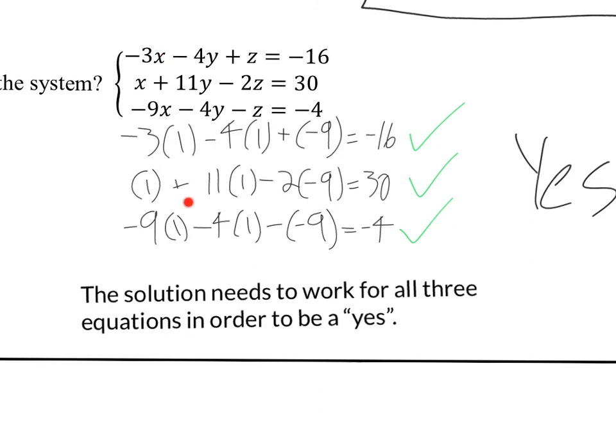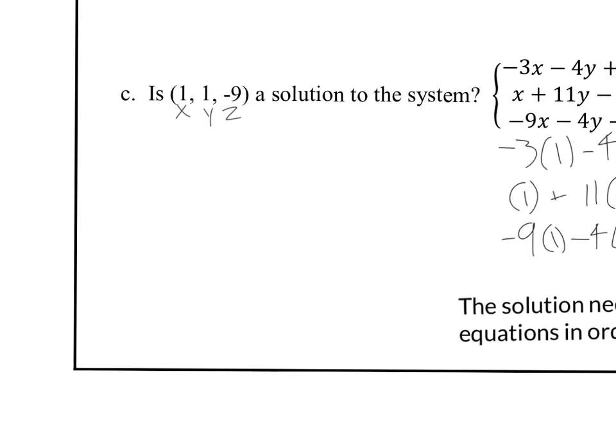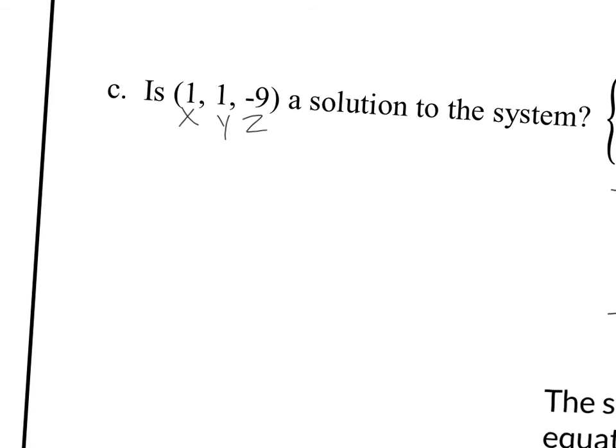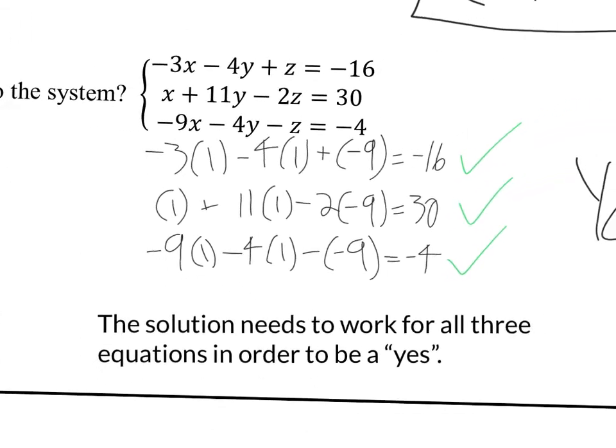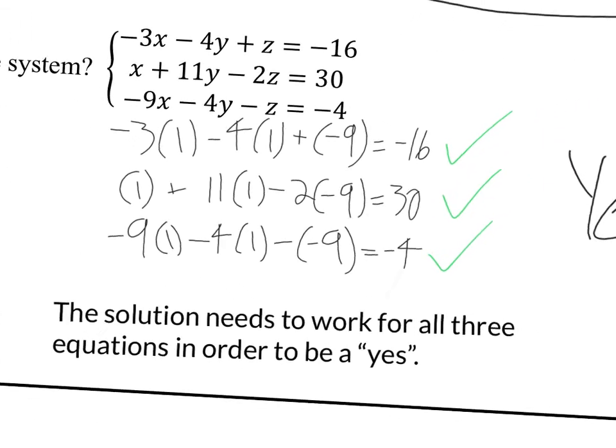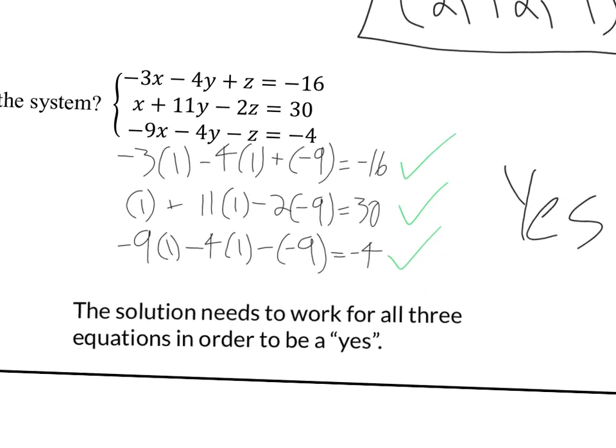I plugged in, you know, 1 for x, 1 for y, negative 9 for z. All right. And that's how, this is how you would show your work. Okay. And then if you have a scientific calculator or a graph calculator, just type in exactly how it is. Every time I replace the letter, I put the number in parentheses. All right. And so, you know, adding in parentheses, never hurt anyone. Okay.